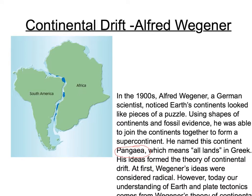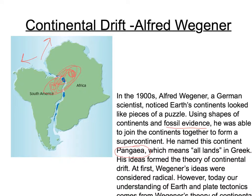Over time, they started gathering fossil evidence — finding the same fossils in this part of South America and this part of Africa. In reality, if those were two separate continents, the same animals would not have evolved in exactly the same way. This is further proof that these continents were once joined together — the same animals lived in the same area until the plates moved apart. It's now quite a well-accepted theory of how the continents used to look.